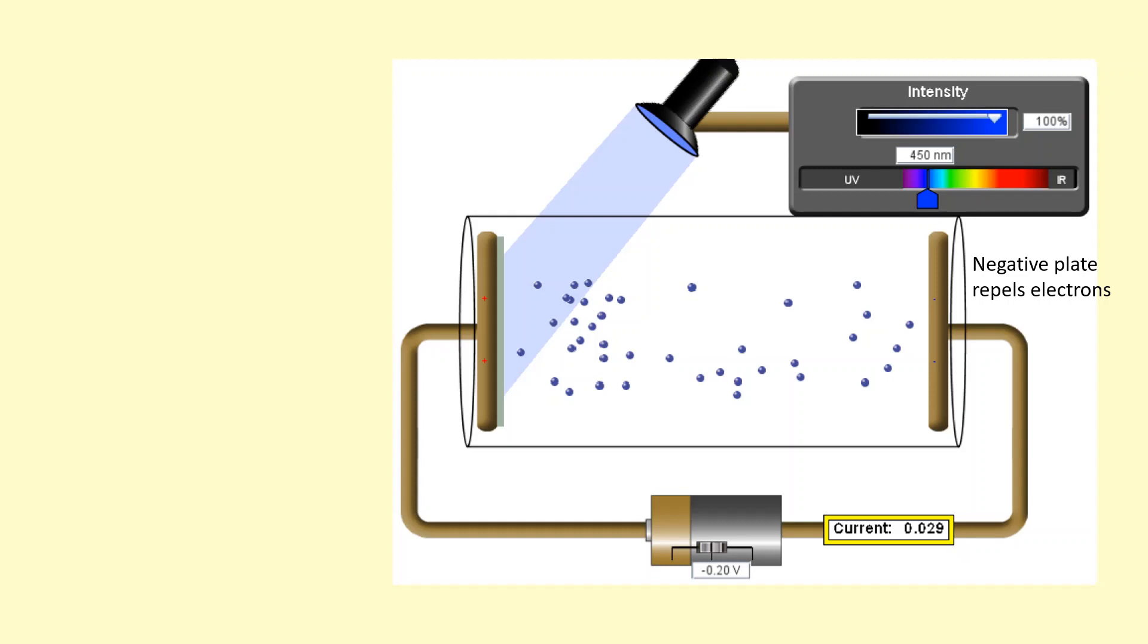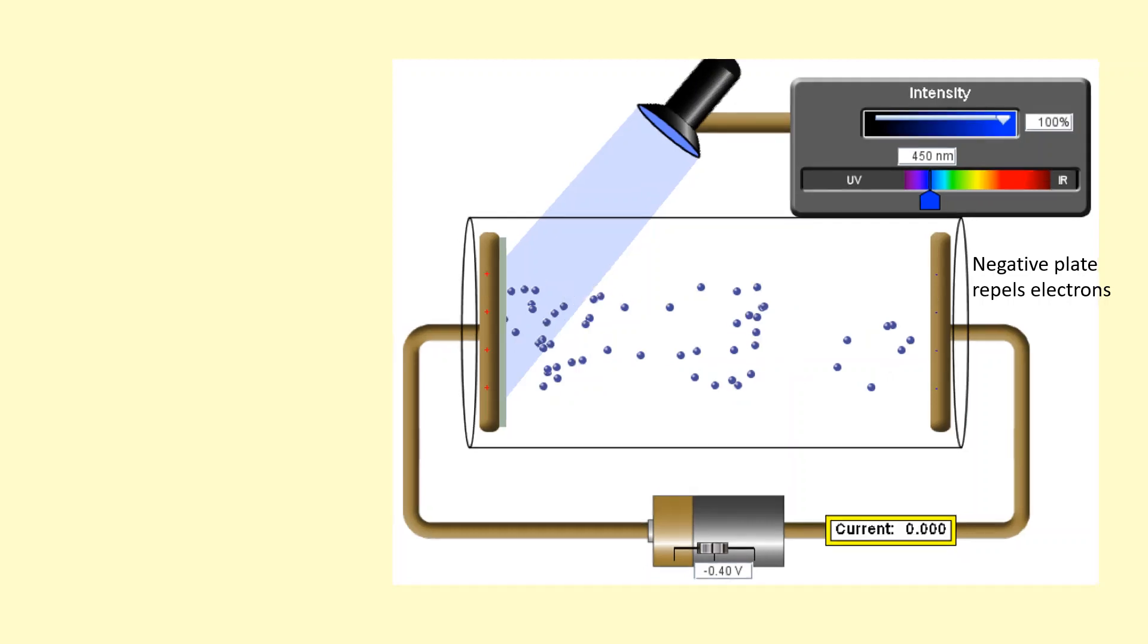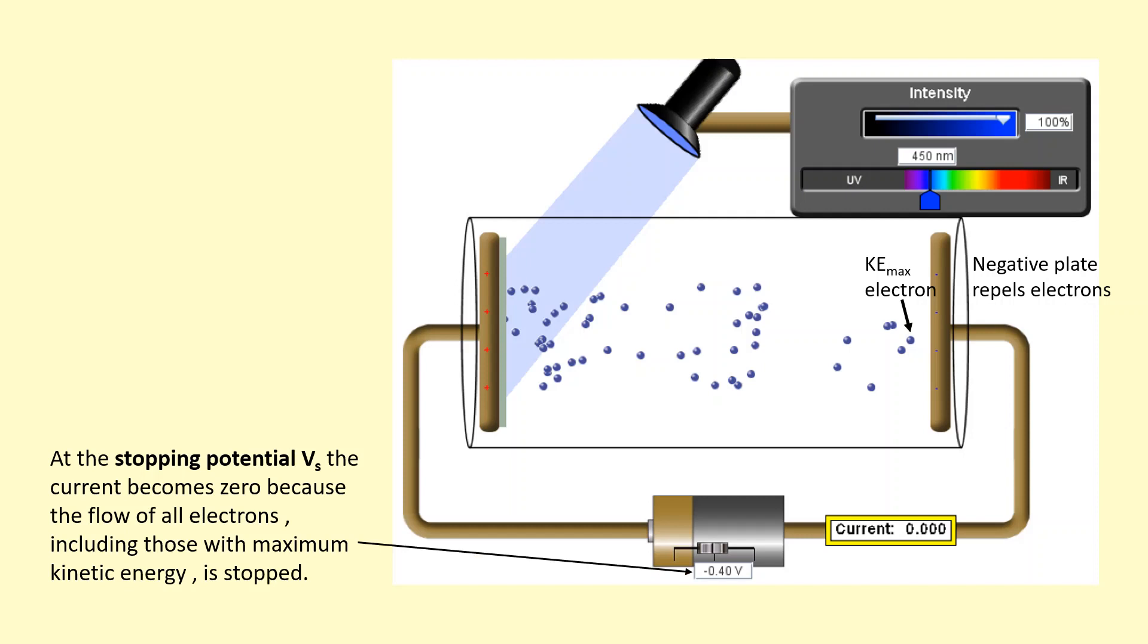And if you carry on making this plate more and more negative, eventually you're going to get to a point where even the electrons with the highest kinetic energy are going to be stopped. And at this potential, this is called the stopping potential, where the current becomes zero because all the electrons are being stopped, including those that are coming out with the highest velocity and the maximum kinetic energy.